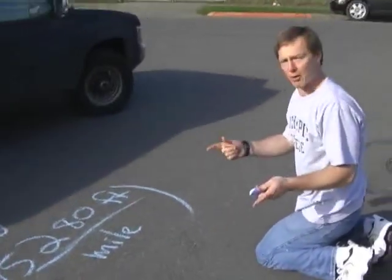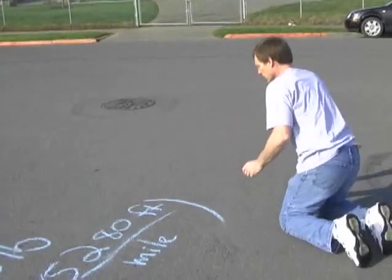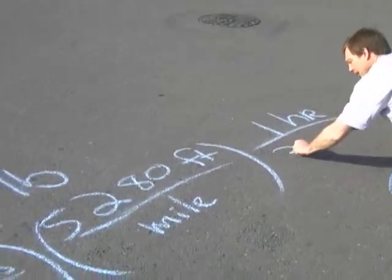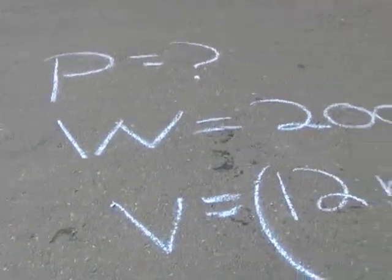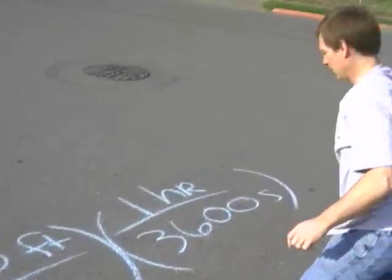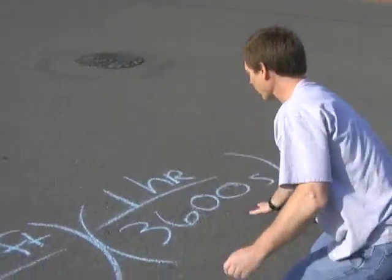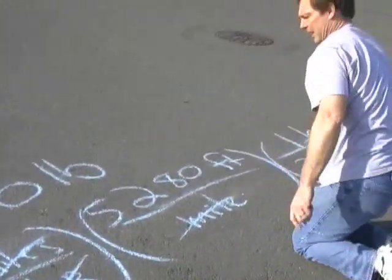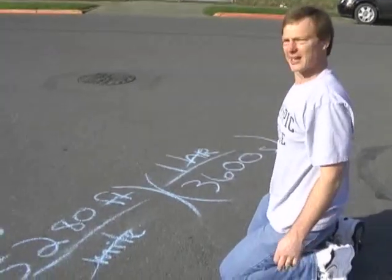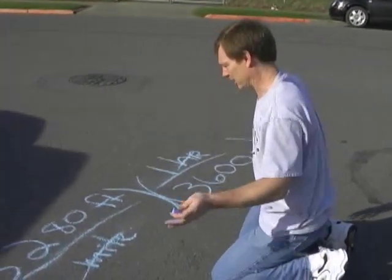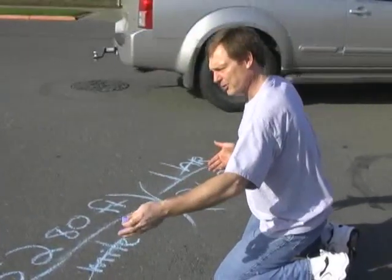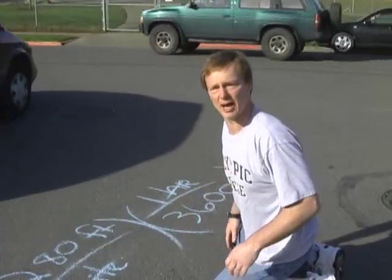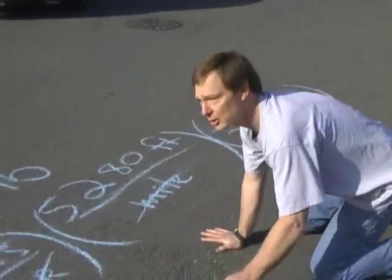We've got hours — there's one hour for every 3,600 seconds. So we've got one hour for every 3,600 seconds. The hours will cancel and the miles cancel, and we get some number. Let's call it about 20 feet per second.